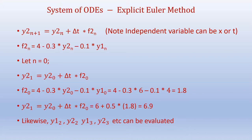Letting n = 0, we have y2_1 = y2_0 + Δt × f2_0. And f2_0 = 4 - 0.3 × y2_0 - 0.1 × y1_0 = 4 - 0.3 × 6 - 0.1 × 4 = 1.8.